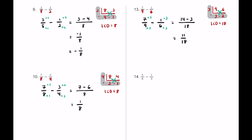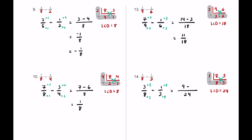For number fourteen we have three-eighths minus one-third. Three is prime and doesn't go into eight, so their GCF is one — meaning we just multiply them: three times eight is twenty-four. Taking three-eighths minus one-third: times three over three on the left and times eight over eight on the right. Three times three is nine, one times eight is eight, so nine minus eight equals one — giving one twenty-fourth.